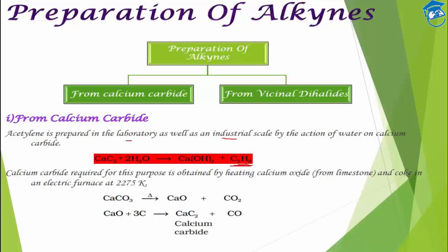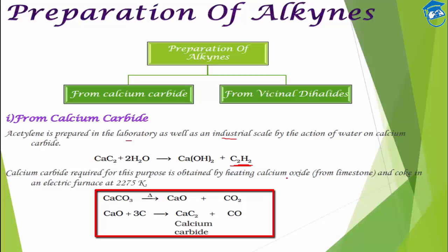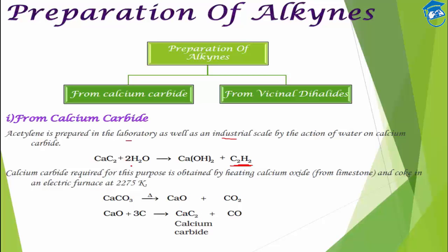Calcium carbide can be prepared by heating calcium oxide — obtained from limestone — and coke in an electric furnace at 2275 Kelvin. Calcium carbonate breaks down into calcium oxide and CO₂ gas. This calcium oxide is then reduced by carbon to form calcium carbide, which on reacting with water produces acetylene.